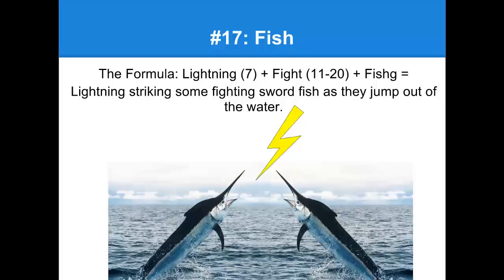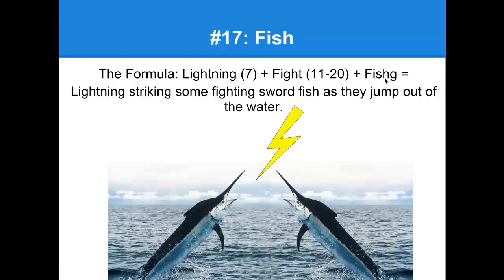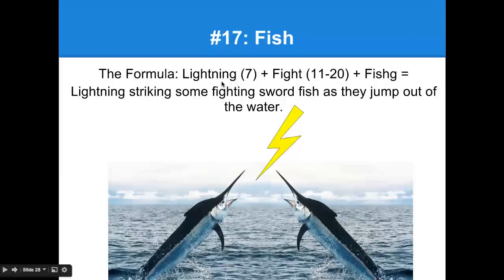Number 17: the formula is lightning plus fight plus fish, which equals lightning striking some fighting swordfish as they jump out of the water. Picture lightning — and there's some kind of a fight. The lightning was striking the swordfish. They jumped out of the water, and both swordfish get electrocuted by the lightning. From that image we recall: seven is the lightning, there was a fight — oh yeah, it was a sword fight among fish. I've got to get fish.